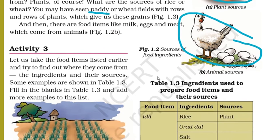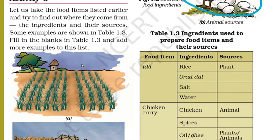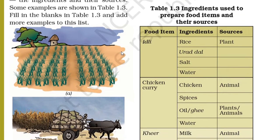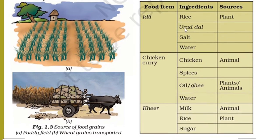Now let's do Activity 3. Let us take the food items listed earlier and try to find out where they come from — the ingredients and their sources. So whatever food items we have discussed till now, let us discuss something about their ingredients and sources. Some examples are shown in table 1.3. Fill in the blanks in table 1.3 and add more examples to this list. This table shows ingredients used to prepare food items and their sources.